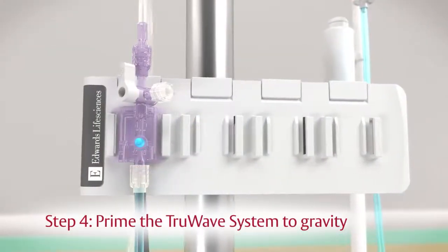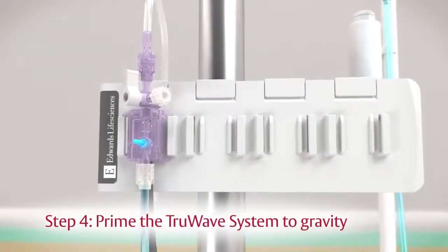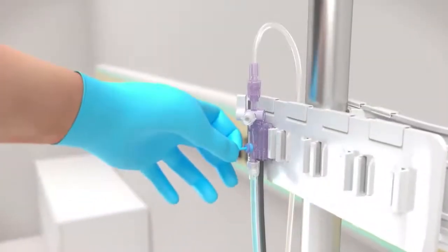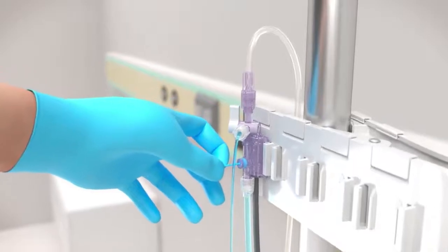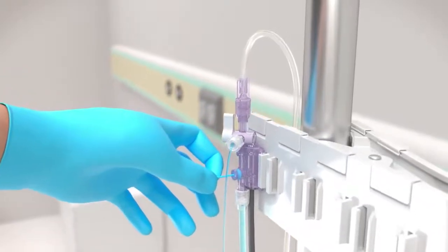Step 4: Prime the TruWave system to gravity to avoid micro-bubbles in the line. Pull the snap-tab flush device to deliver the flush solution through the TruWave transducer and out through the vent port's vented cap.